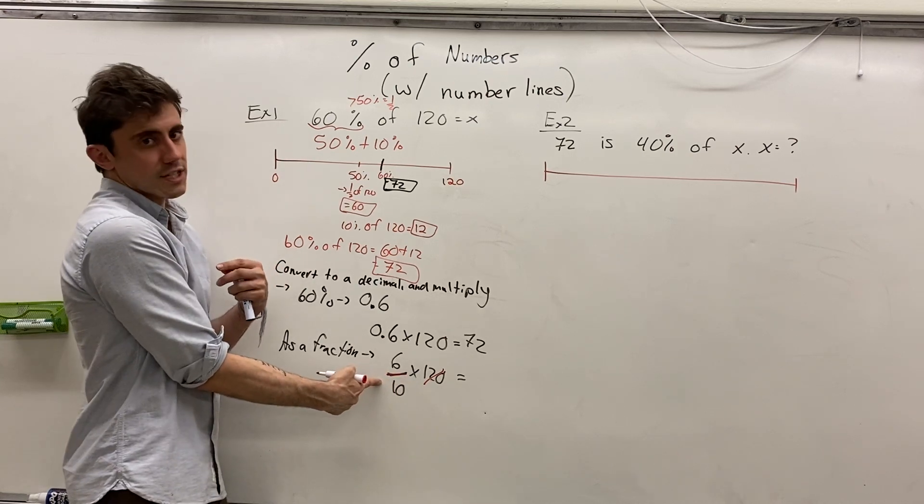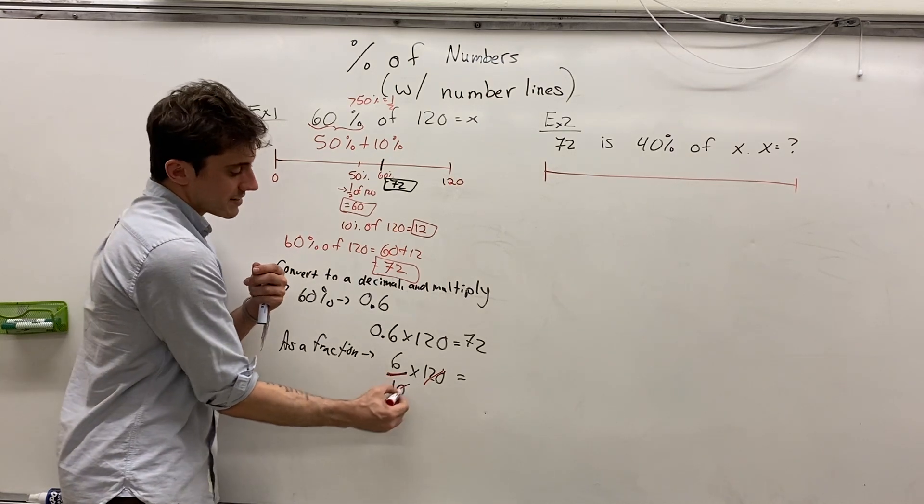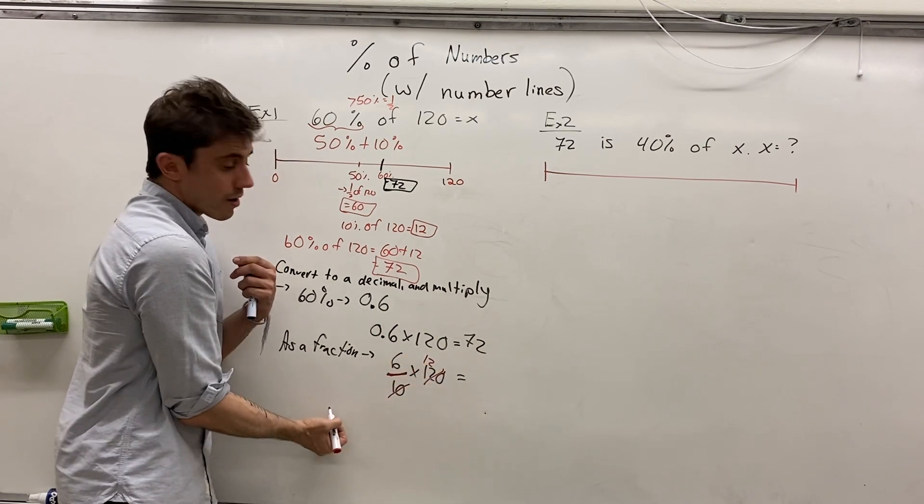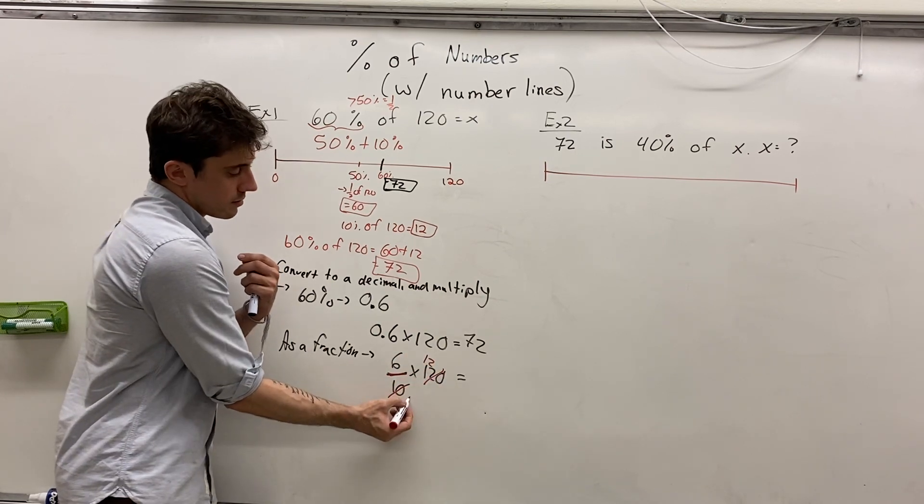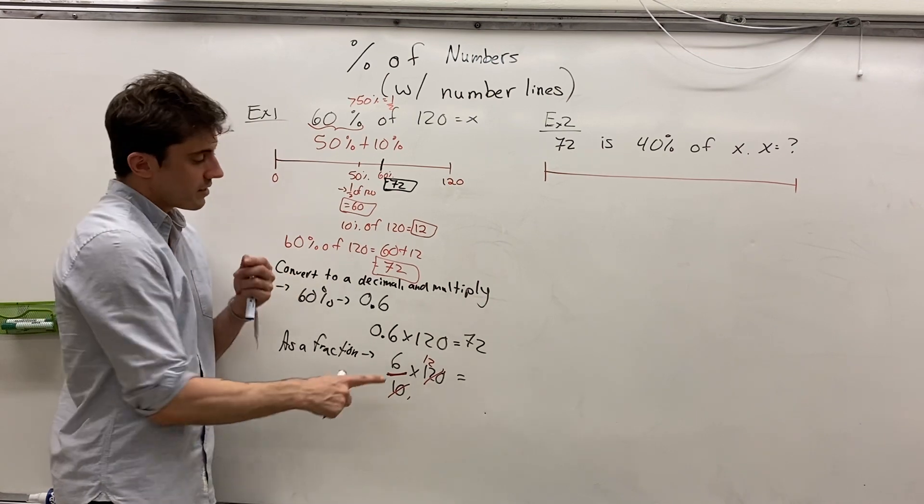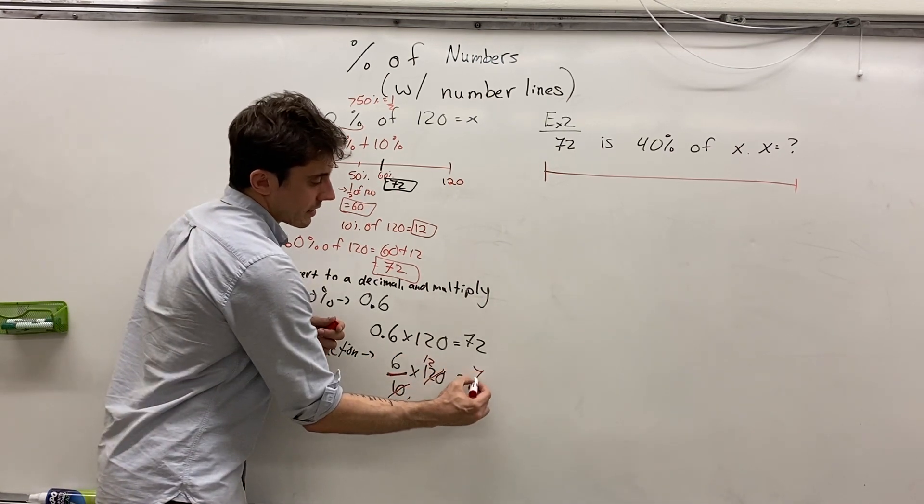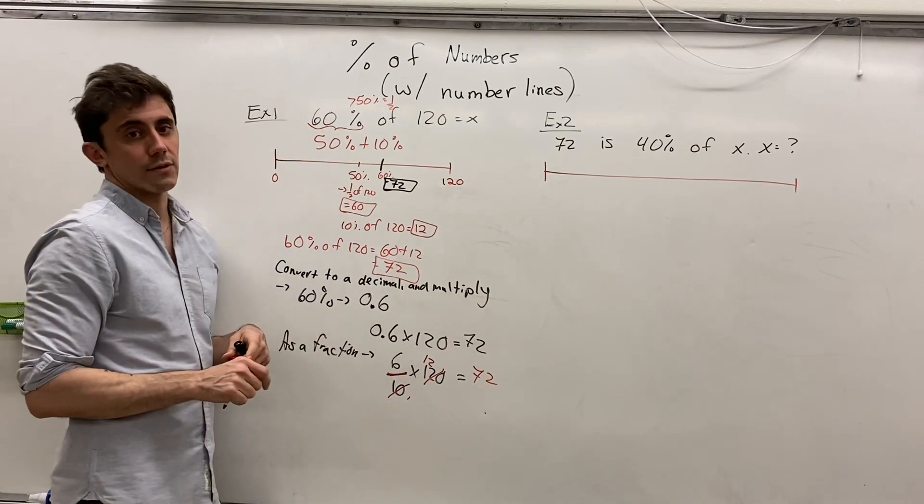120 divided by 10. 120 divided by 10 simplifies to simply 12 over 1. But the 1 is redundant. And so what we're left with is 6 times 12, which again, gives a value of 72.